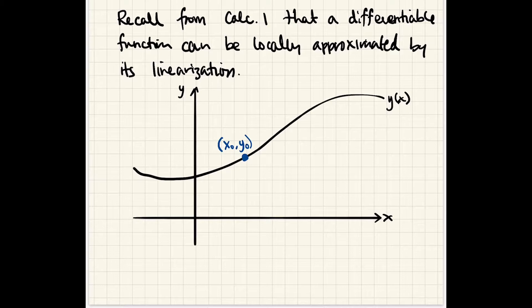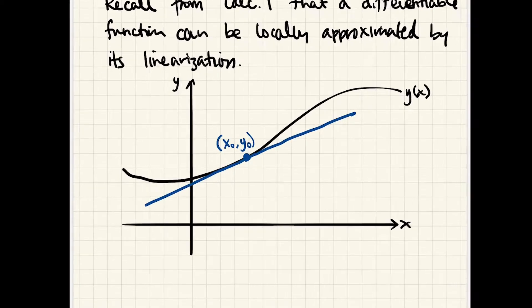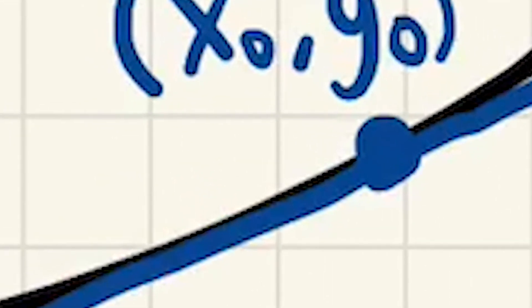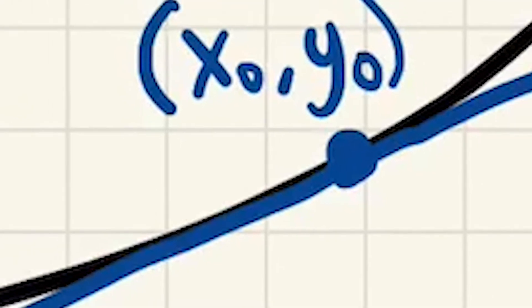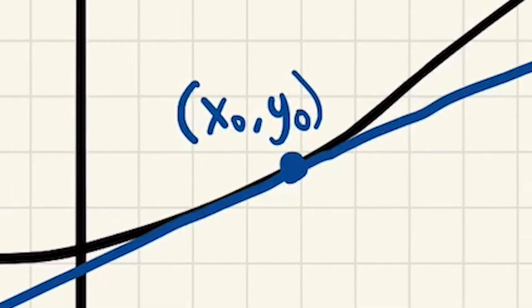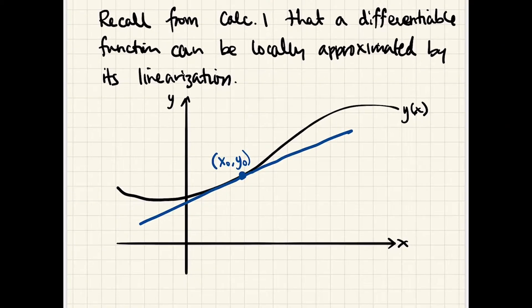Then we can approximate y(x) by drawing a tangent line through (x₀, y₀), which near that point is very close to the function itself. Of course, the linearization is a bad approximation usually overall, globally across the function, but it's a good approximation locally through the point we're dealing with.